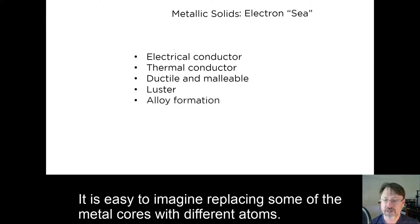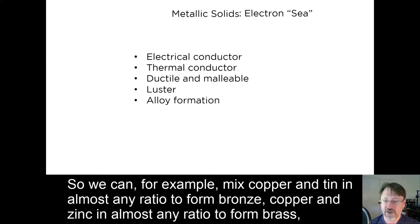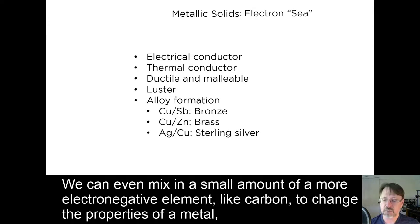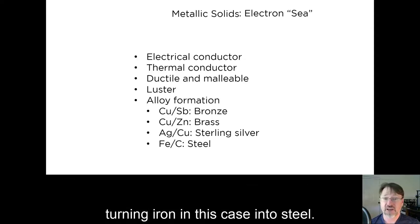It's easy to imagine replacing some of the metal cores with different atoms. So we can, for example, mix copper and tin in almost any ratio to form bronze, copper and zinc in almost any ratio to form brass, silver and copper to make sterling silver. We can even mix in small amounts of a more electronegative element, like carbon, to change the properties of the metal, turning iron, in this case, into steel.